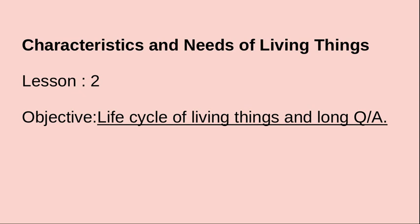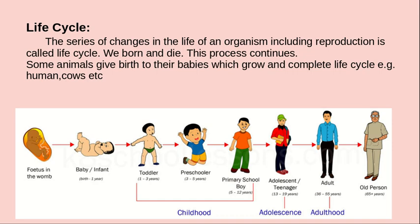Life cycle: the series of changes in the life of an organism, including reproduction, is called a life cycle. In other words, all the changes in any organism's life — from birth, including reproduction, to death — are together called the life cycle of that organism.